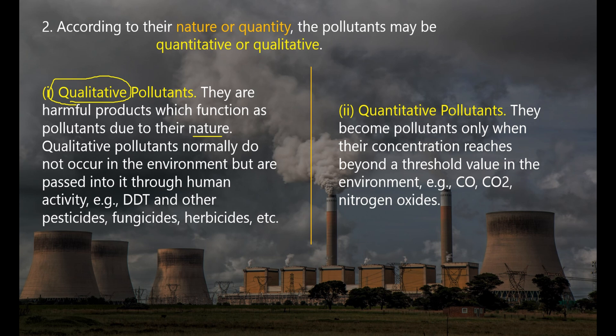It does not matter how much quantity it is — it is a qualitative pollutant. Qualitative pollutants normally do not occur in the environment but are passed into it through human activity. Examples include DDT used against mosquito larvae, and other powerful chemicals such as pesticides, fungicides, and herbicides.